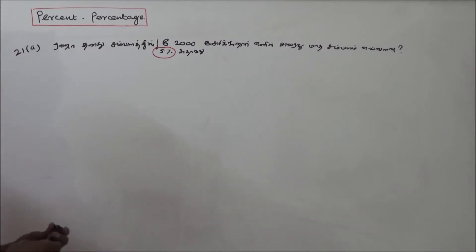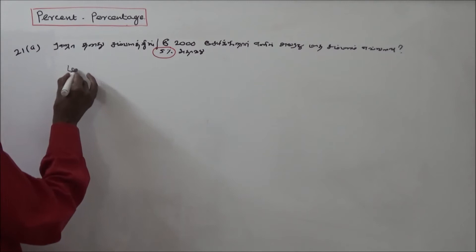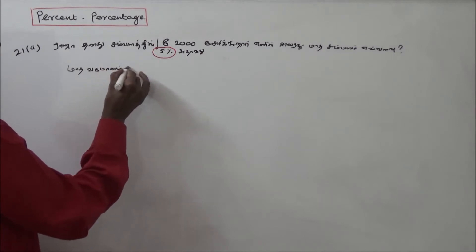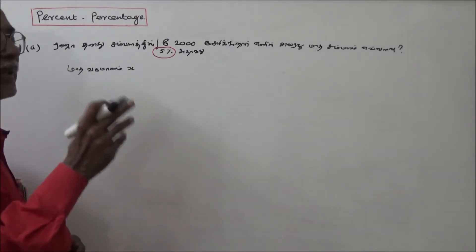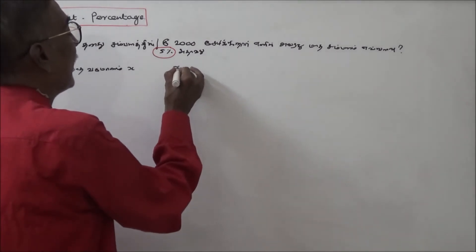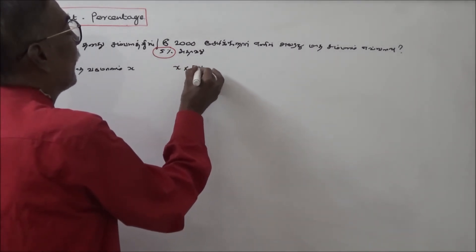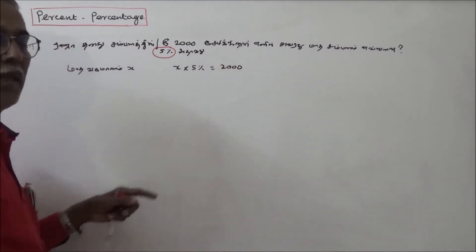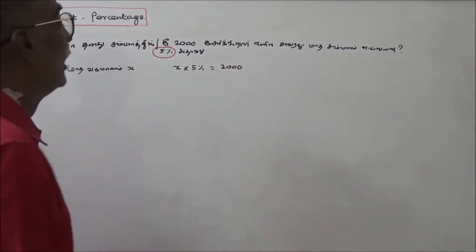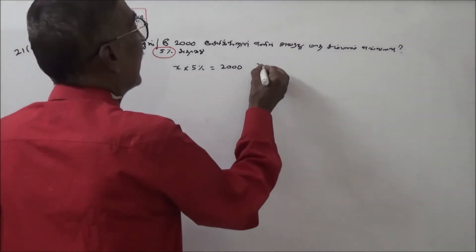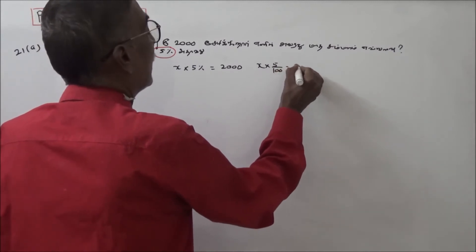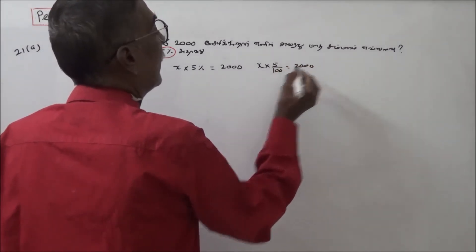Let the total salary be x. Then x is 5 percentage, which equals 2,000 rupees. So x into 5 by 100 is equal to 2,000 rupees.